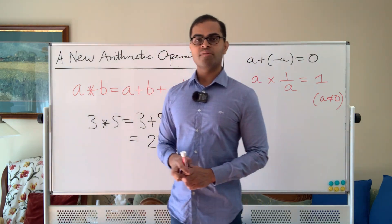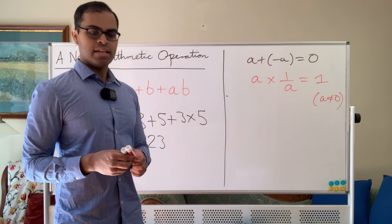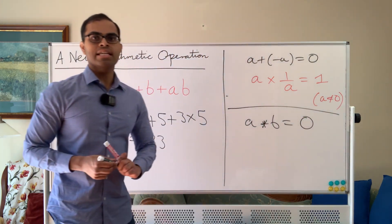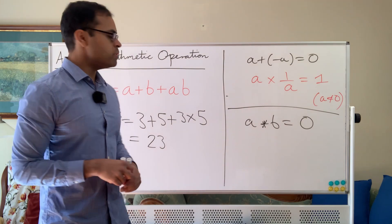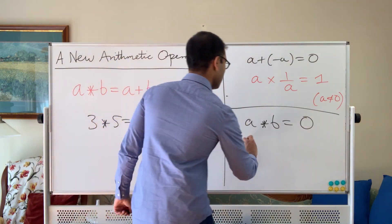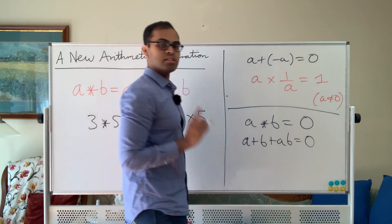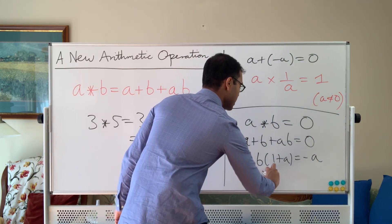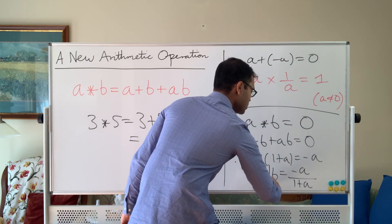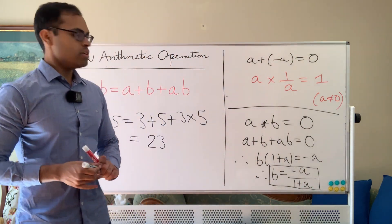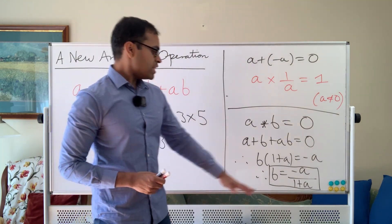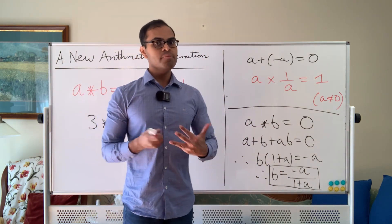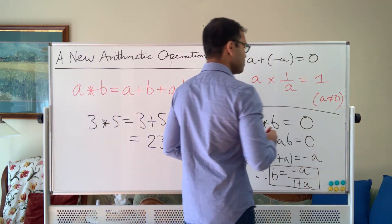This star operation also has an inverse for every element. We want to find a b such that a star b equals 0, since 0 is the identity. Writing out a star b: a plus b plus ab equals 0. Solving for b, we get b times (1 plus a) equals negative a, and therefore b equals negative a over (1 plus a). This is going to be our inverse to a. But this is not defined if a equals negative 1, since the denominator is 0. So just like multiplication, there's one element that doesn't have an inverse — every element has an inverse except negative 1.